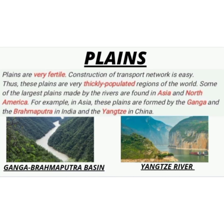Plains are very fertile and the construction of transport networks is easy. Thus, plains are very thickly populated regions of the world. Some of the largest plains made by rivers are found in Asia and North America. In Asia, these plains are formed by the Ganga and Brahmaputra in India, and the Yangtze in China.